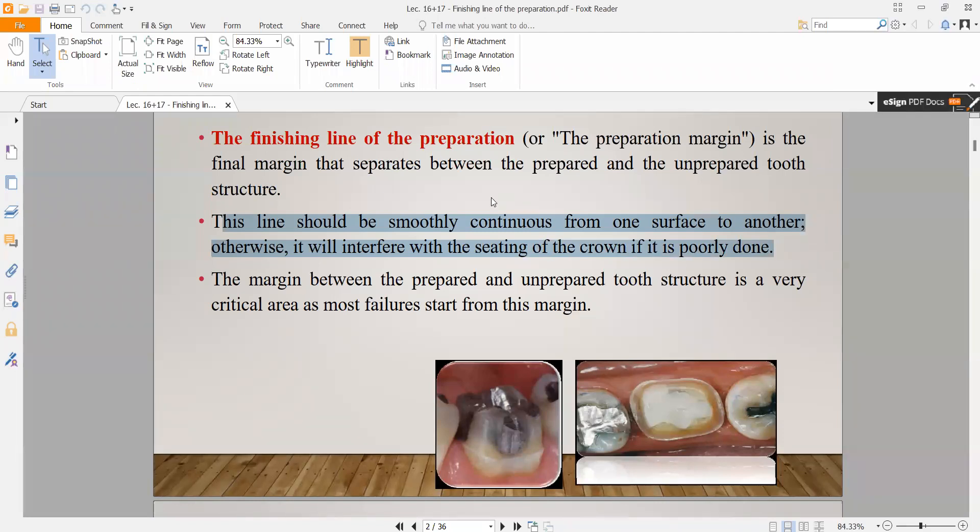In case if we haven't done it, we need to be smooth. If it was rough, we would have to do secondary caries. This is why we need to be smoothly continuous. The margin between the prepared and unprepared tooth structure is a very critical area.